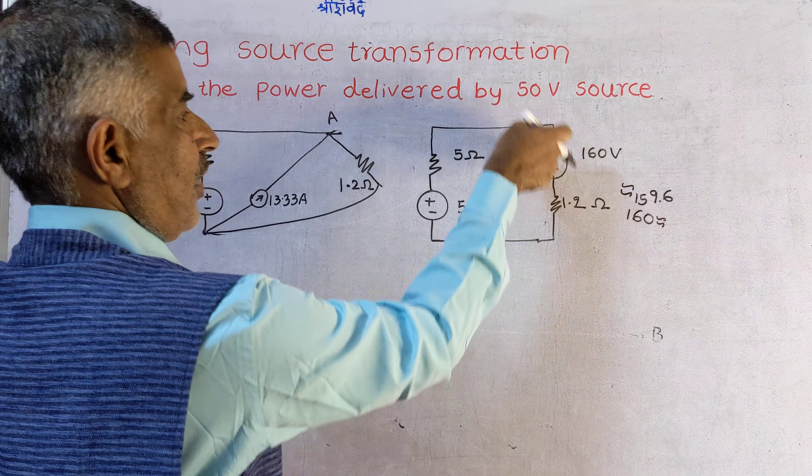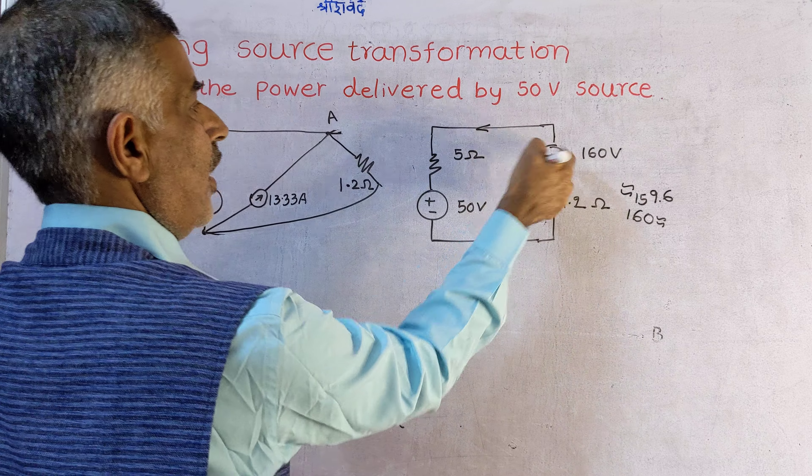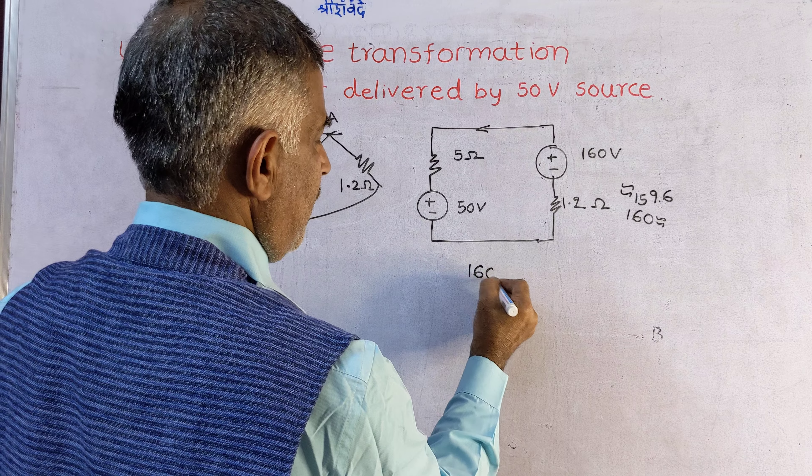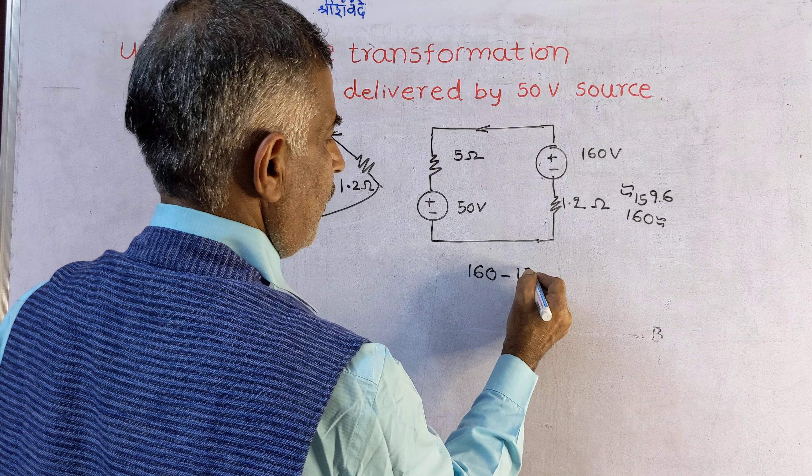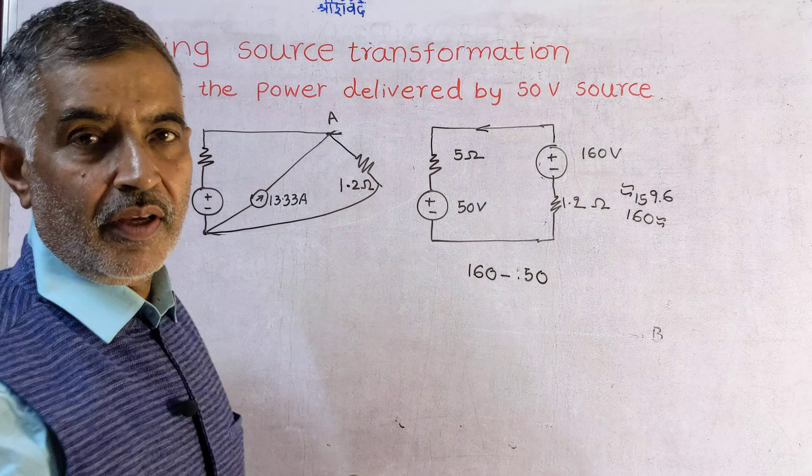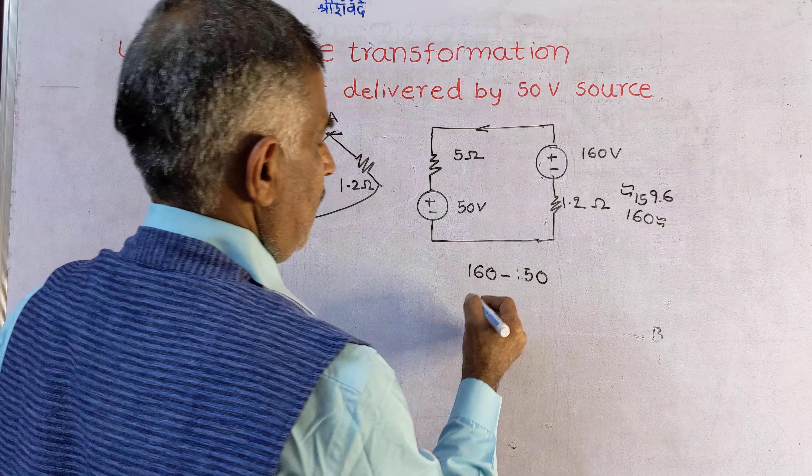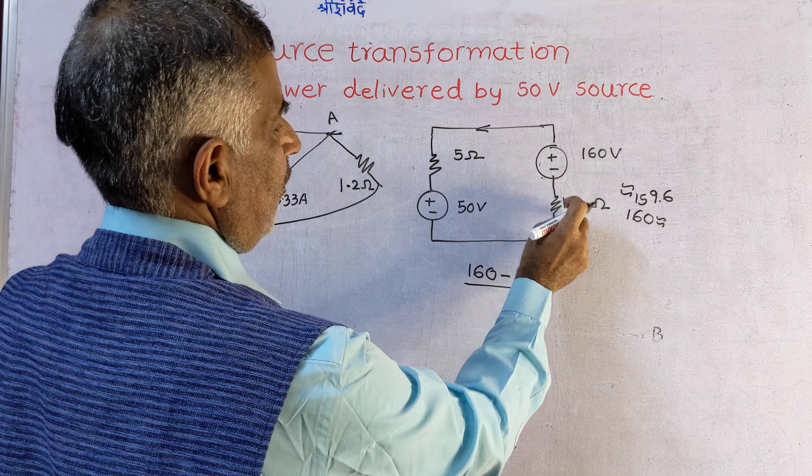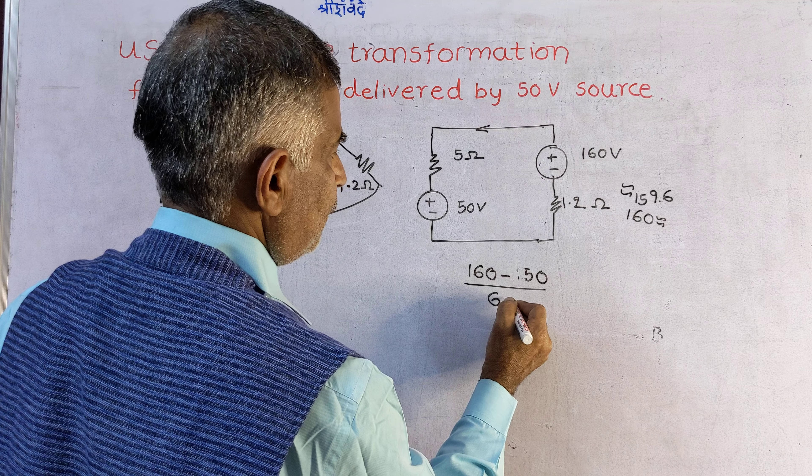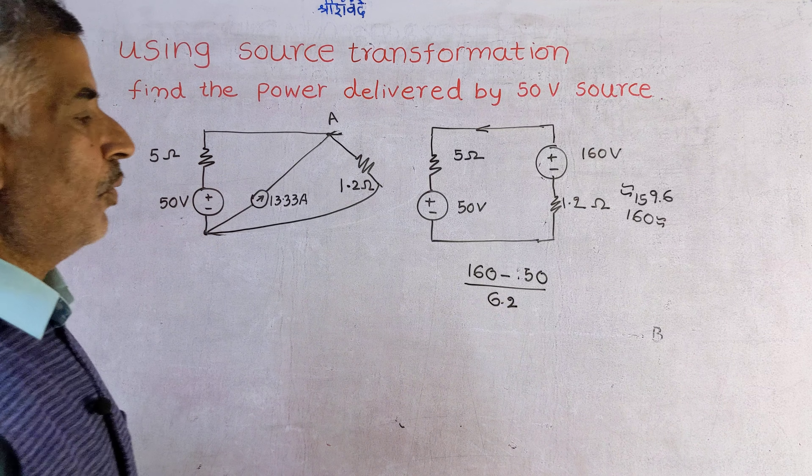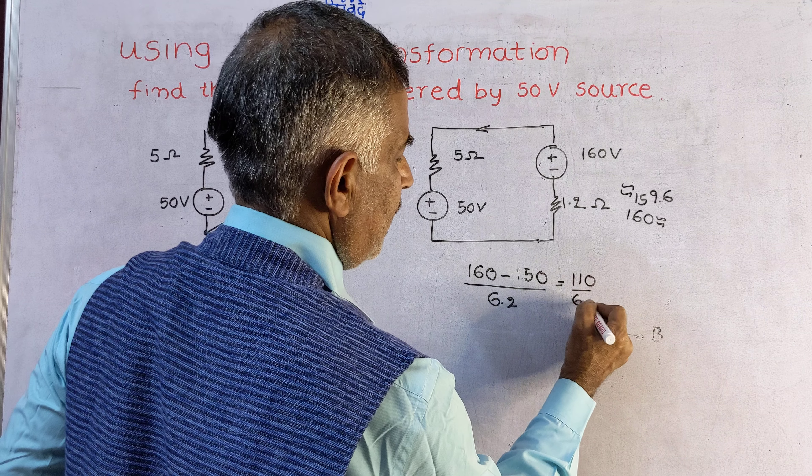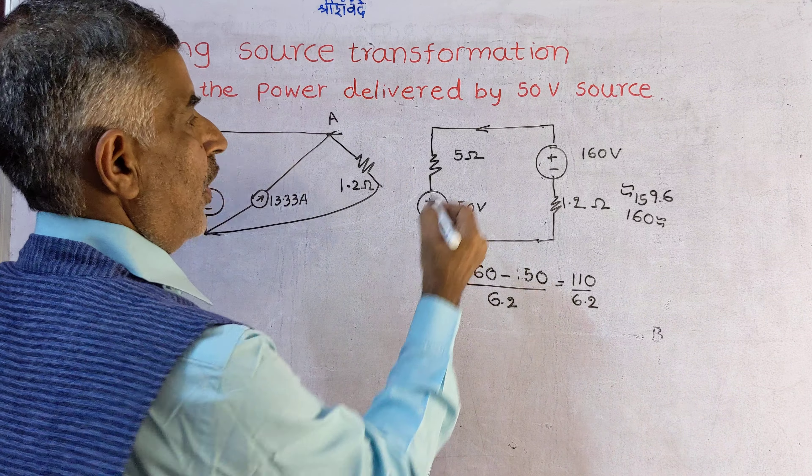Now this drives current. This drives current. Therefore current in the circuit is 160 minus 50, because plus is connected with plus, divided by 5 plus 1.2, that is 6.2. That is 110 divided by 6.2 amperes.